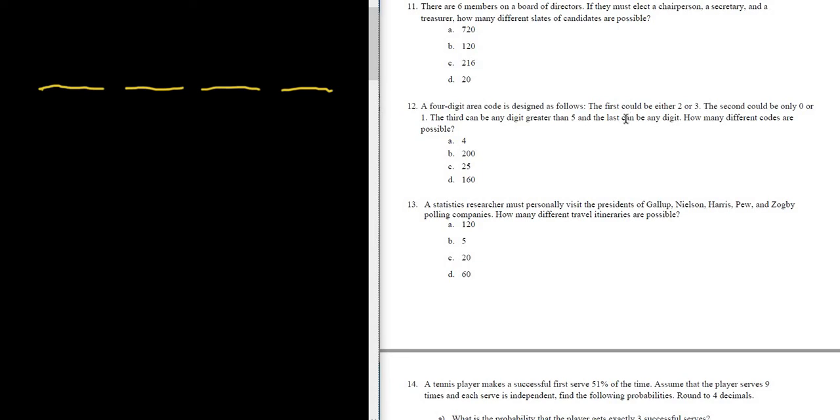So it says the first digit could be a 2 or a 3. That means there are two choices for the first digit. The second digit could be only 0 or 1. So again, two choices for the second digit.